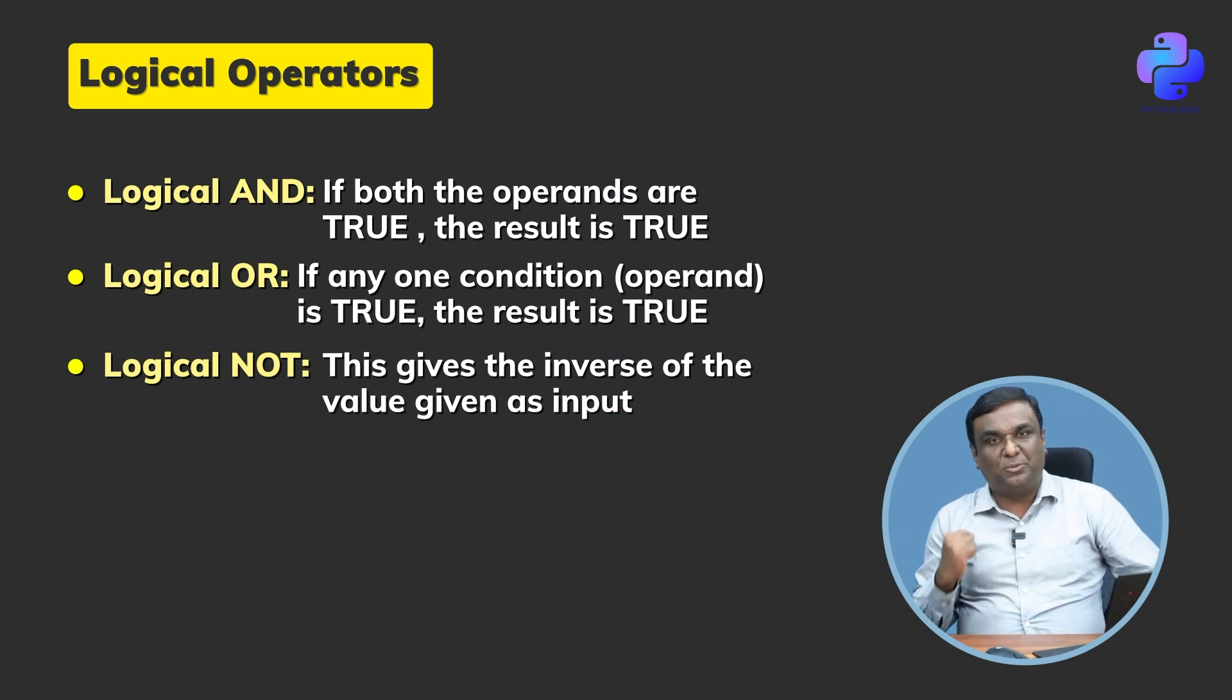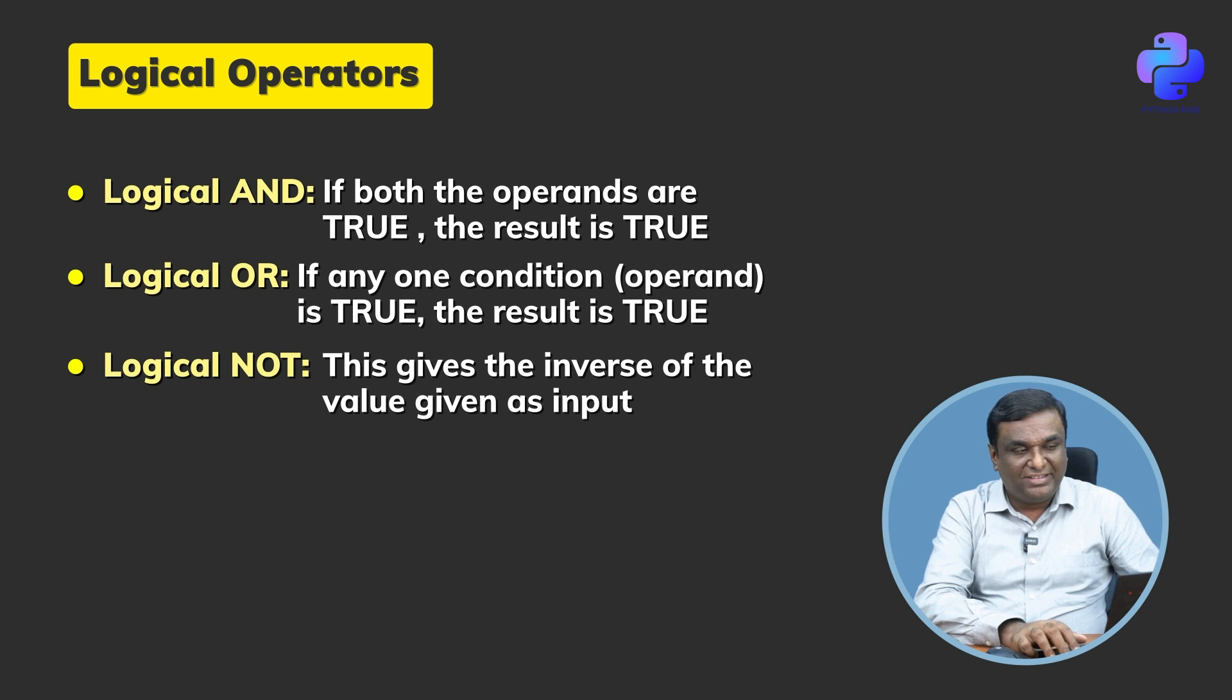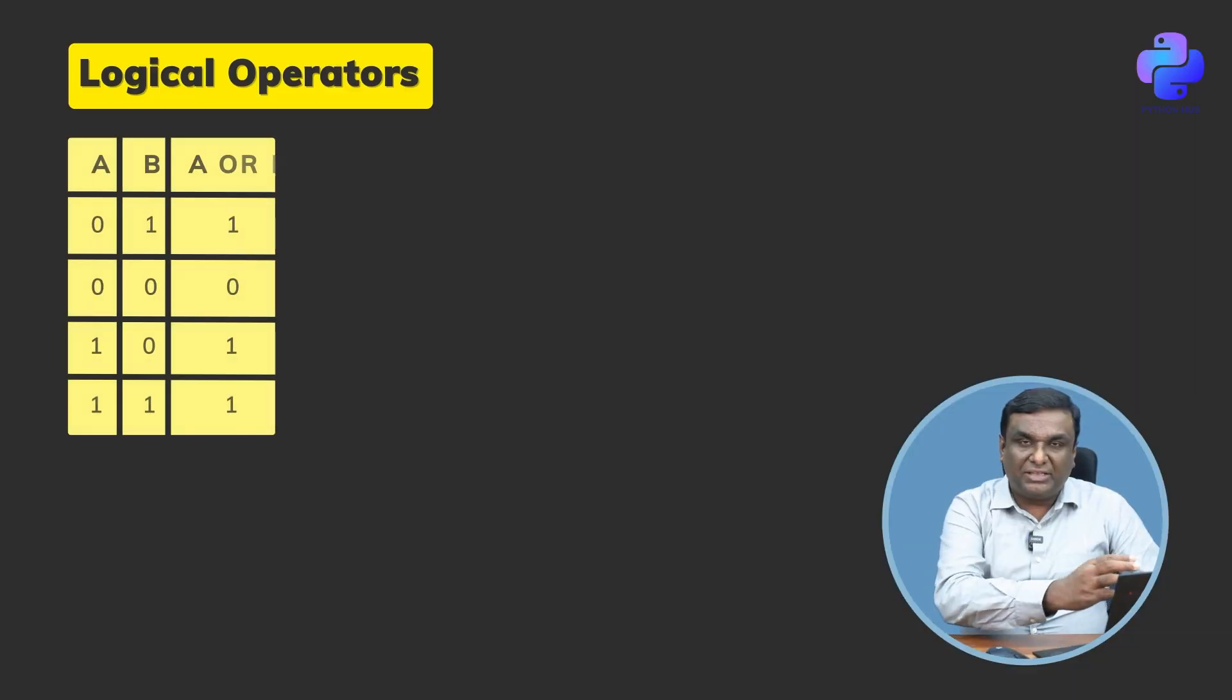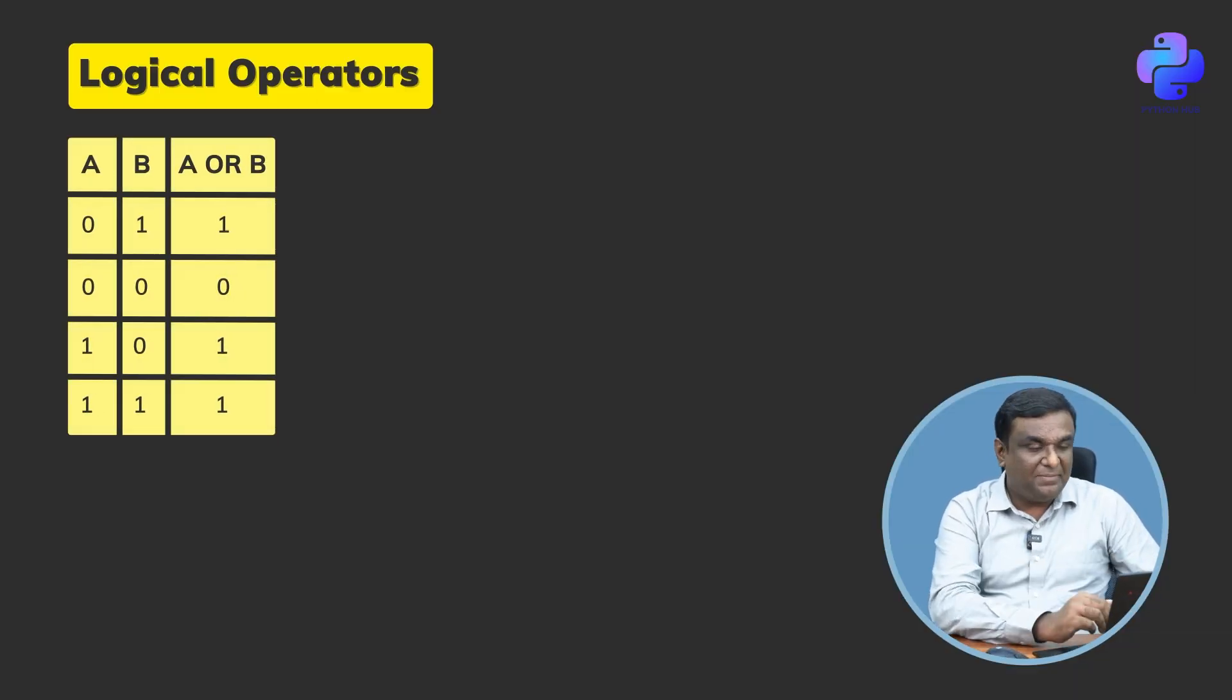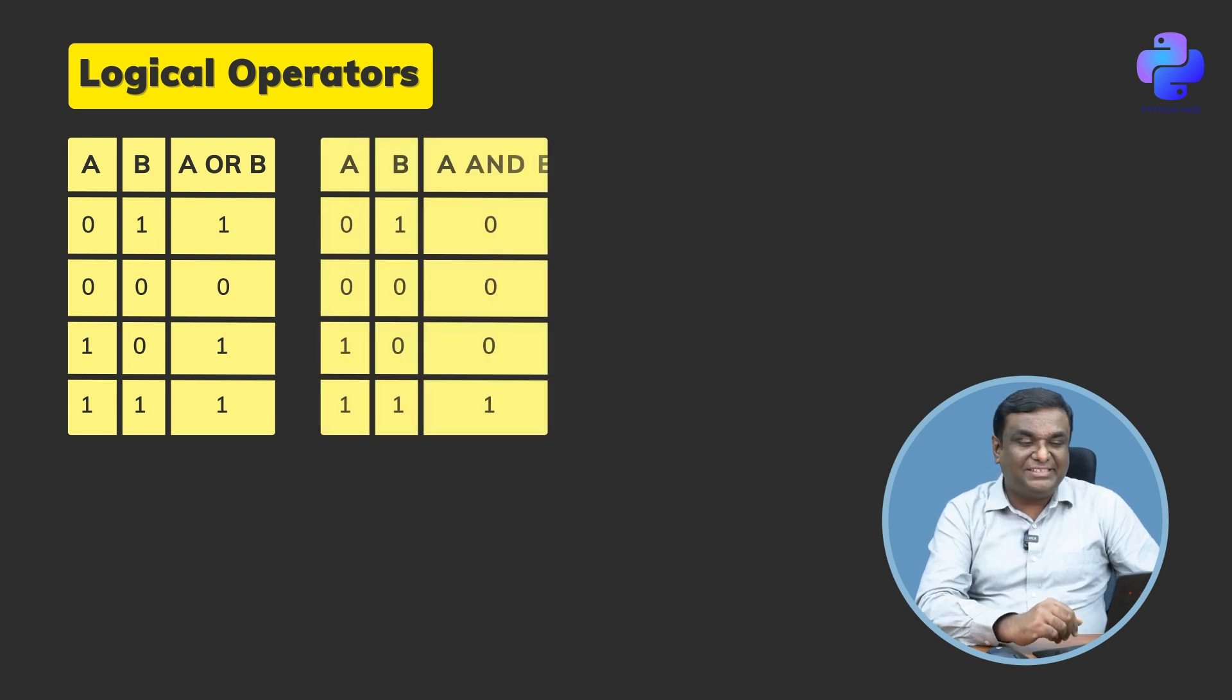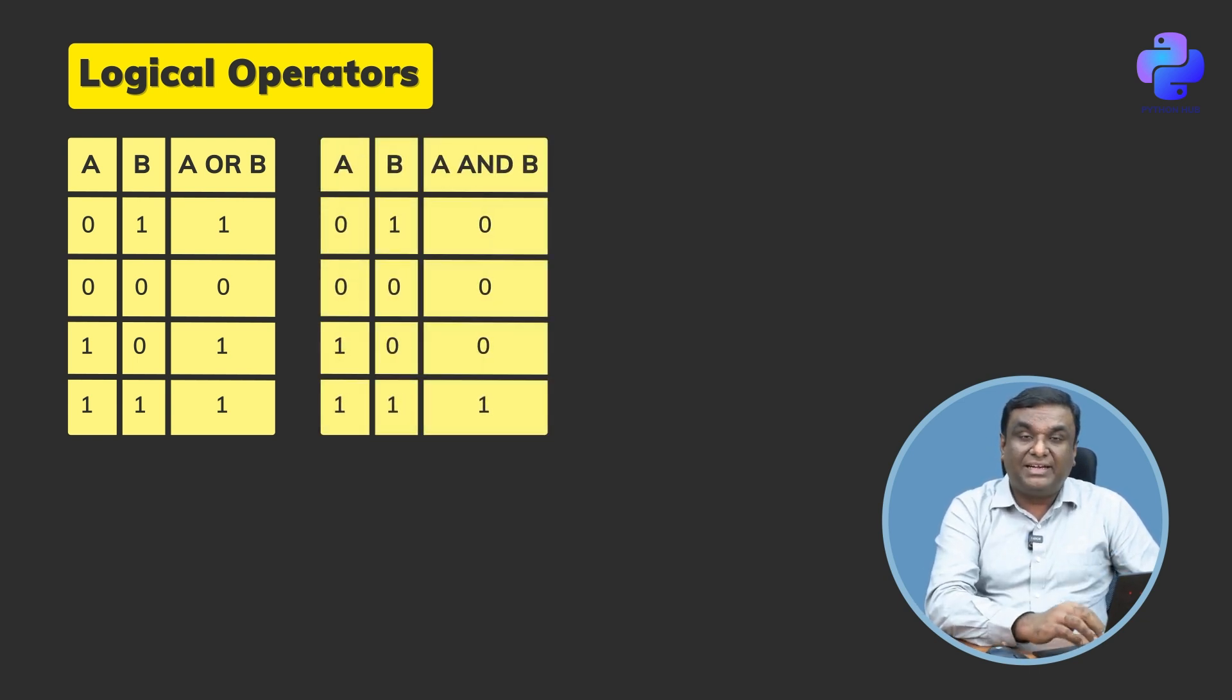Let me show you some examples of how these logical operators work. If you look at the screen: a zero b one. A OR b means it is one because even if one of the is true, I'm going to consider it as true. That's what our operator defines for us. AND means zero and one will return zero because I want both of them to be one, only then I'll get one as an output, as you can see on the table very clearly.